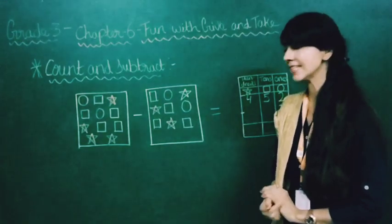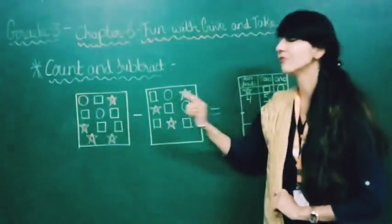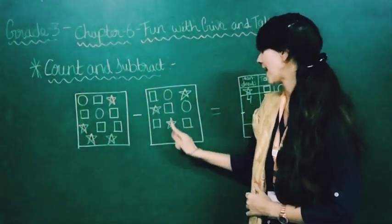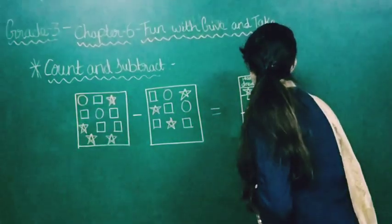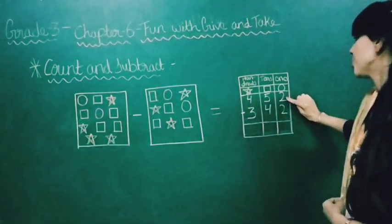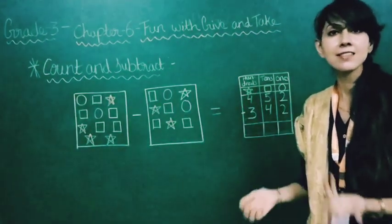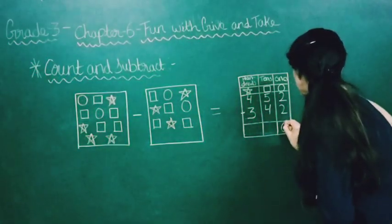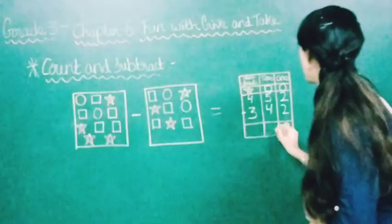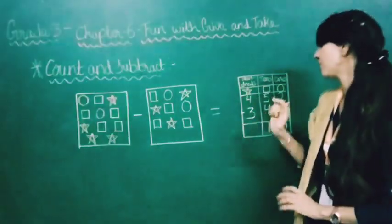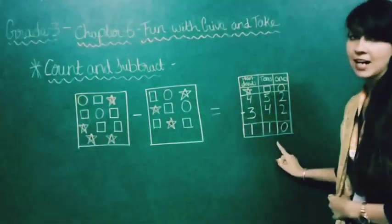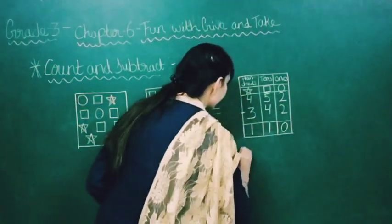In the second box: 4 stars, and 3 stars. Now we subtract: 2 minus 2 is 0. 5 minus 4 is 1. 4 minus 3 is 1. So our answer is 110.